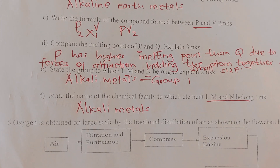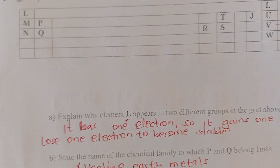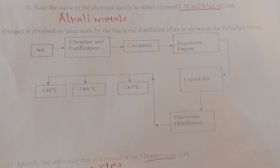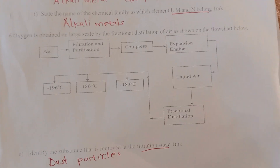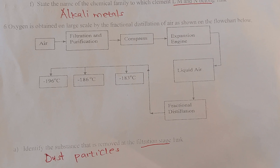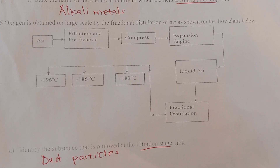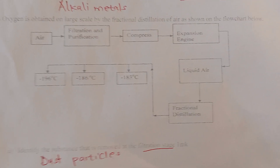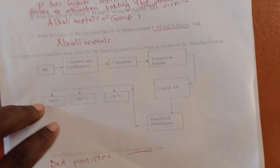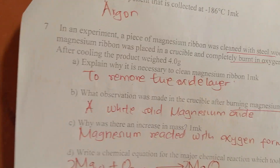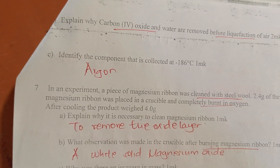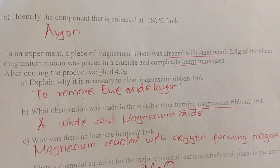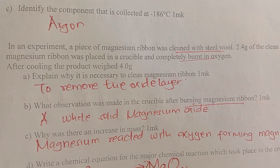State the group to which L, M, and N belong. L, M, and N are in group 1, and therefore they are alkali metals. Oxygen is obtained on a large scale through fractional distillation. The substance removed at the first stage is dust particles. Carbon dioxide and water are also removed. The component collected at negative 186°C is argon.